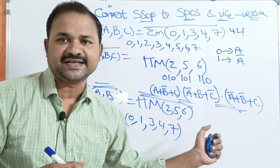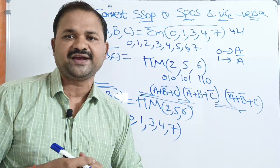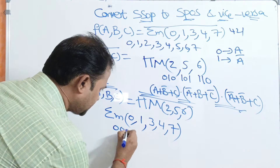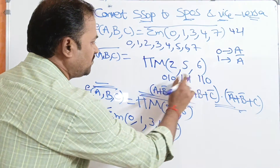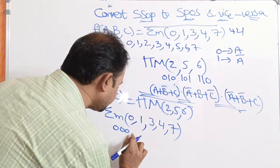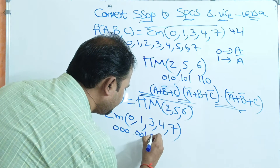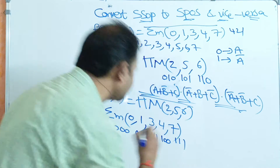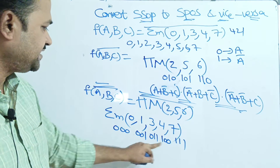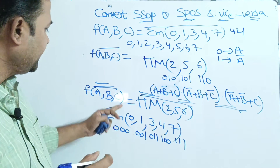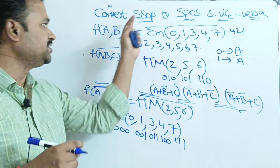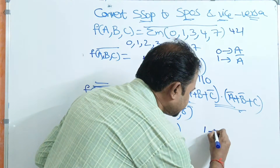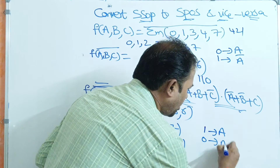If we want, we can write in the form of expression also. In order to obtain the expression, we need to find the binary values. 0 in binary is 0,0,0. 1 in binary is 0,0,1. 3 in binary is 0,1,1. 4 in binary is 1,0,0. 7 in binary is 1,1,1. In SSOP, 1 means actual variable and 0 means complement of the variable.